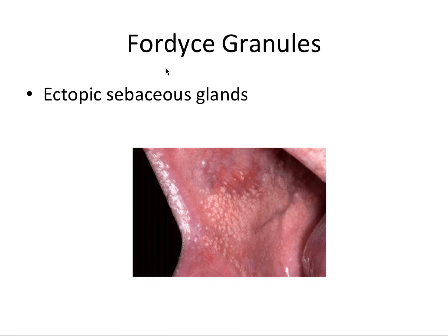Fordyce granules are ectopic sebaceous glands — if you remember this, it's probably all you need to know. They're completely benign, no treatment necessary at all. The characteristic locations are either on the buccal mucosa or the labial mucosa inside the lips.